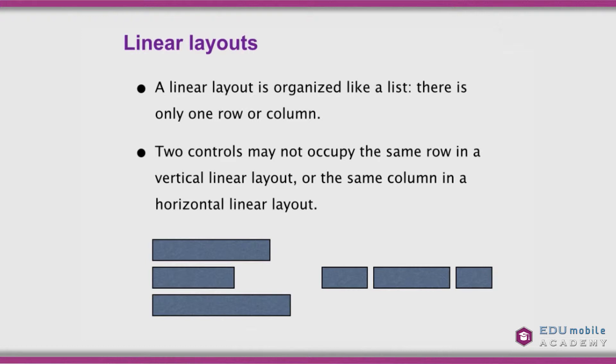A linear layout is organized like a list. There is only one row in a horizontal linear layout and only one column in a vertical linear layout. Two controls may not occupy the same row in a vertical layout or the same column in a horizontal linear layout. The picture to the left shows a vertical linear layout and to the right is a horizontal linear layout — these are typically what they tend to look like.